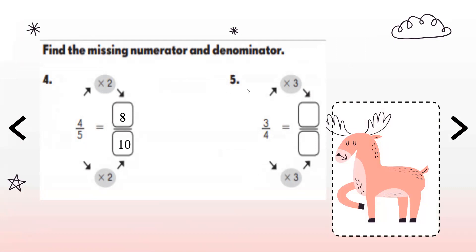Moving to the next example. Again, we're given the factor we're using, and we're multiplying up and down by the same number. Here we have 3 fourths. First I'll multiply the 3 by 3, which will give me 9. Then I will multiply the 4 by 3, which will give me 12. So the equivalent fraction is 9 over 12.